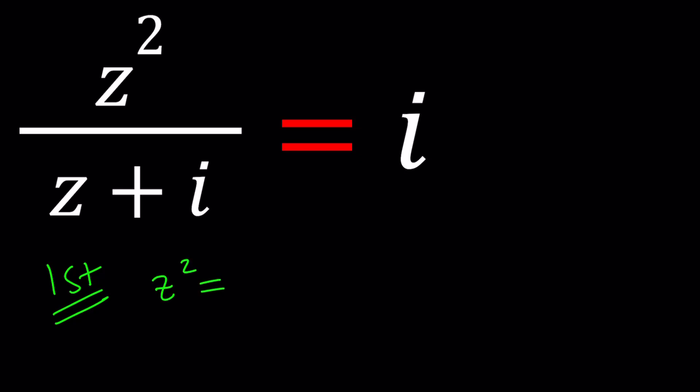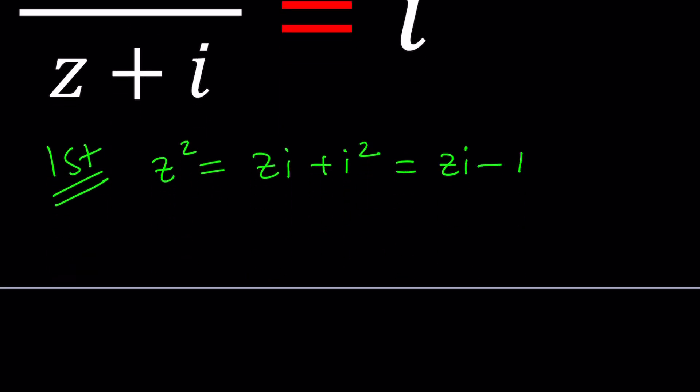So z squared is going to be zi plus i squared. Something to keep in mind, i squared is negative 1. We talked about it, right? So this can be written as zi minus 1. So we got z squared equals zi minus 1.